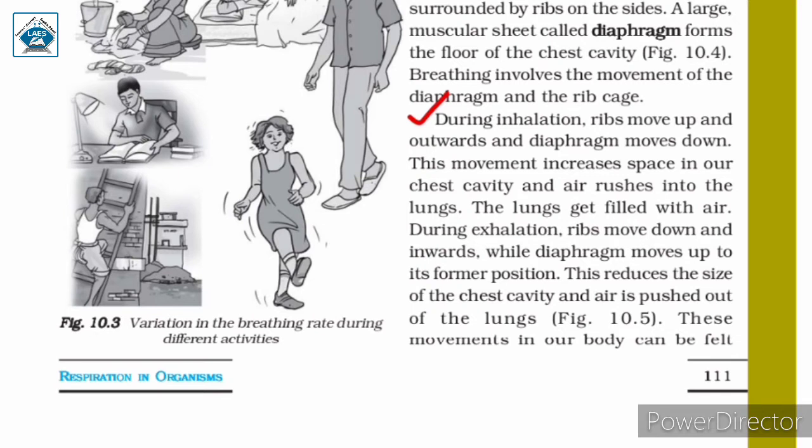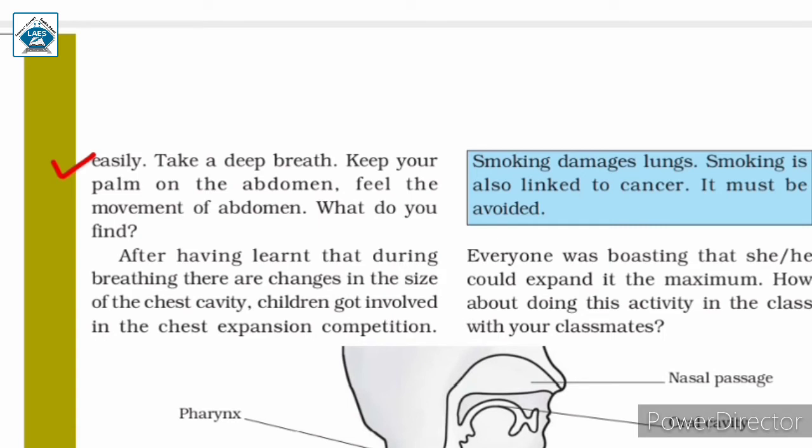During inhalation, ribs move up and outwards and the diaphragm moves down. This movement increases space in the chest cavity and air rushes into the lungs. During exhalation, ribs move down and inwards while the diaphragm moves up to its former position. This reduces the size of the chest cavity and air is pushed out of the lungs. You can take a deep breath, keep your palm on your abdomen, and feel the movement.